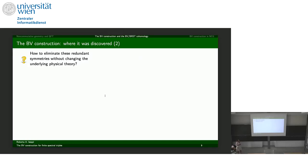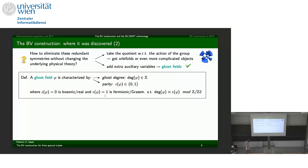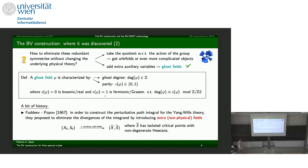One approach to dealing with redundant symmetries is to brutally quotient, but often this does not give nice mathematical objects. The BV idea is instead to add more variables — auxiliary variables, or as physicists call them, ghost fields — and see what happens. A ghost field is characterized by a ghost degree (an integer), a parity indicating whether we deal with a bosonic real variable or a fermionic Grassmann one, with the degree and parity coinciding modulo Z₂.